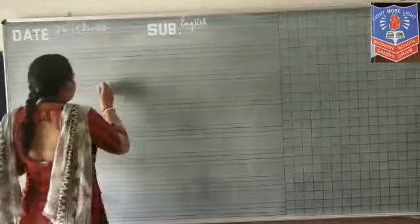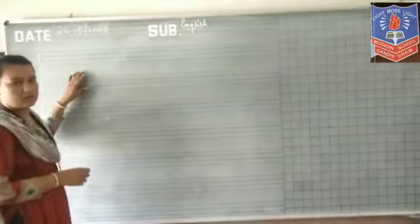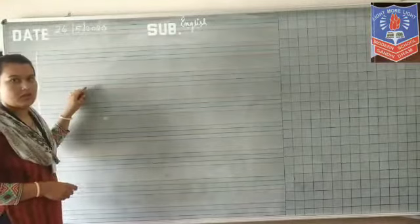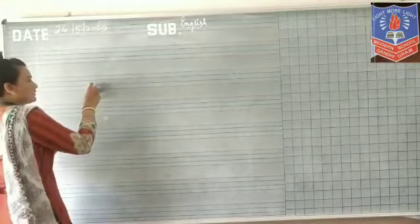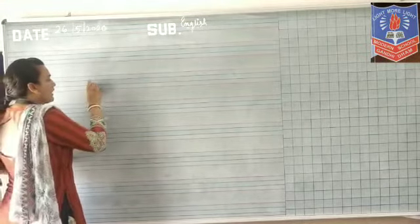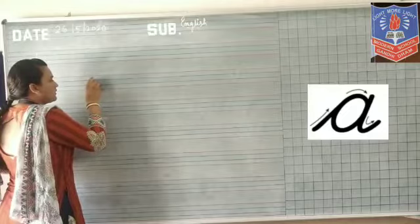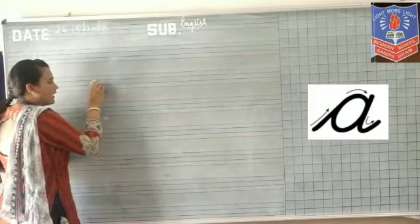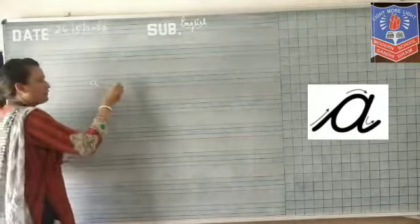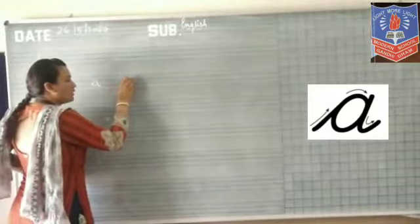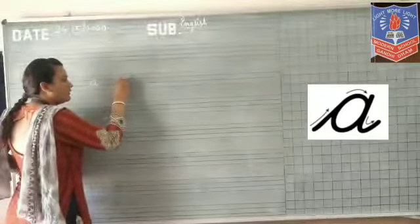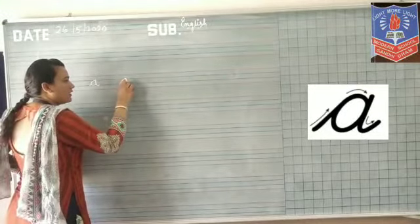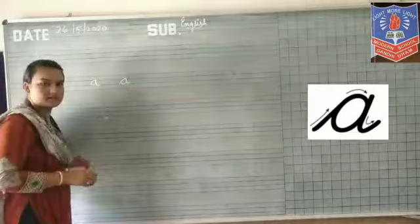Here, in your notebook, there is a folder. First letter, alphabet A — you can write like this. First, you can take a small curve and write A like this.